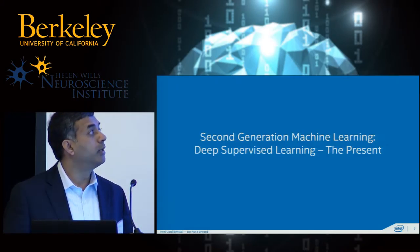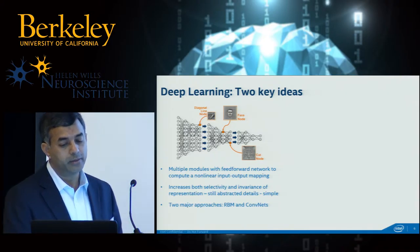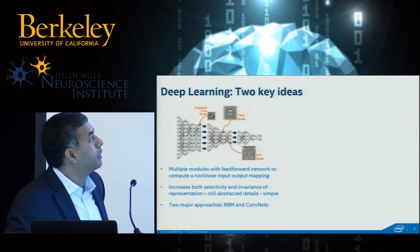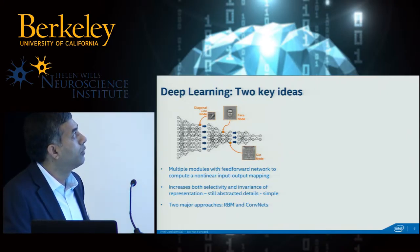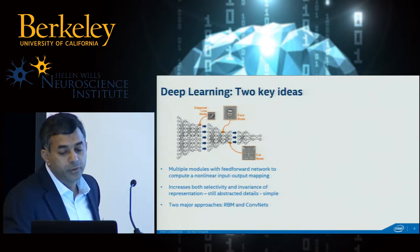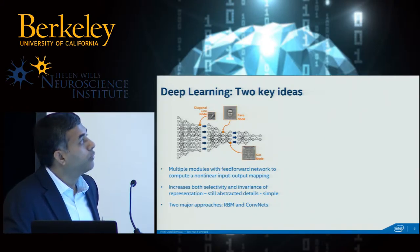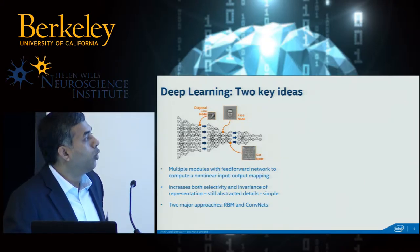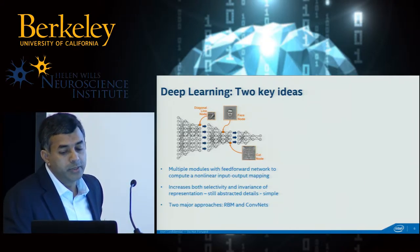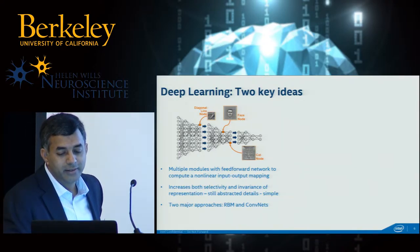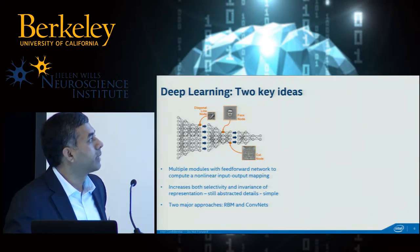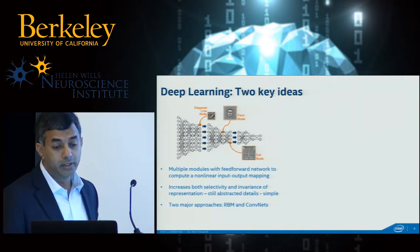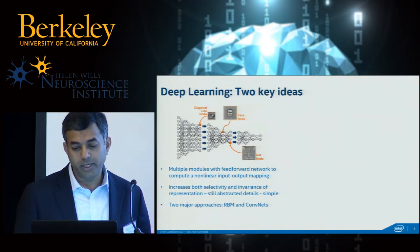Now the present — deep supervised learning. The idea is that you have multiple modules with a feed-forward network to compute a non-linear input-output mapping. If you allow many, many layers and many neurons to process information in a feed-forward manner, the hope is that you get increased selectivity and invariance to representation. It still abstracts details away, as we heard from Christophe's talk about the level of complexity in the neural system. There were two major approaches that drove this field forward from shallow to deep learners.